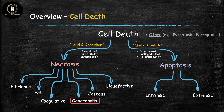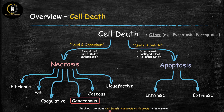We're talking gangrenous necrosis today, which is a type of cell death, so let's start with a quick overview. Cells die by a variety of different mechanisms. The main two are apoptosis and necrosis, and these two are kind of the opposite of each other in most ways. Apoptosis itself occurs by two different mechanisms, and necrosis actually has six different types — each describing the underlying morphology of the necrotic tissue.